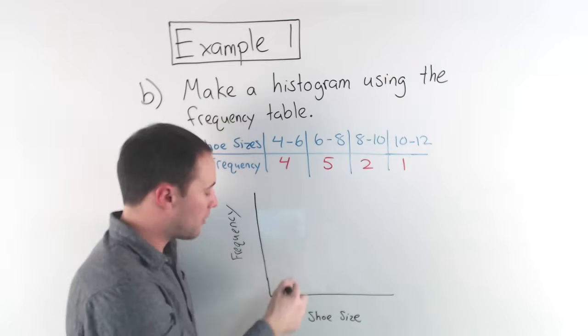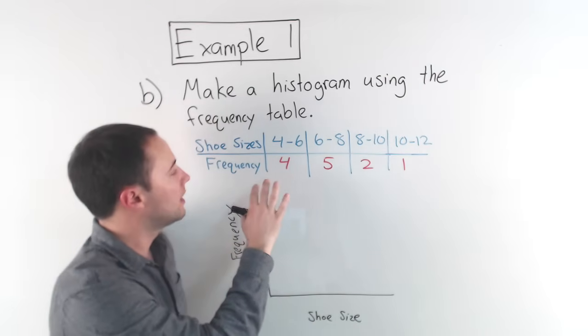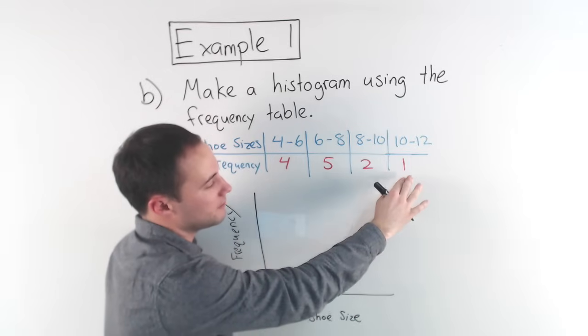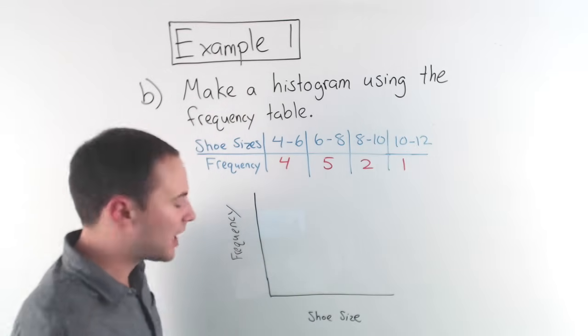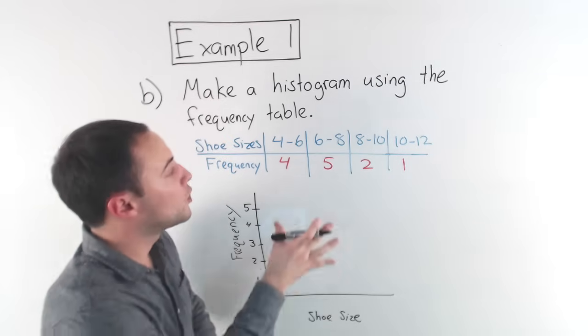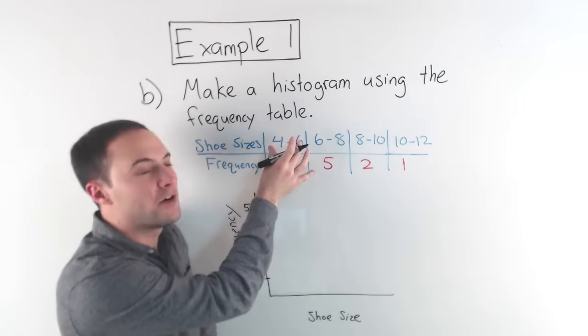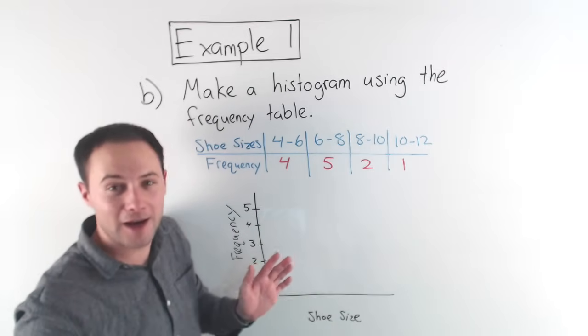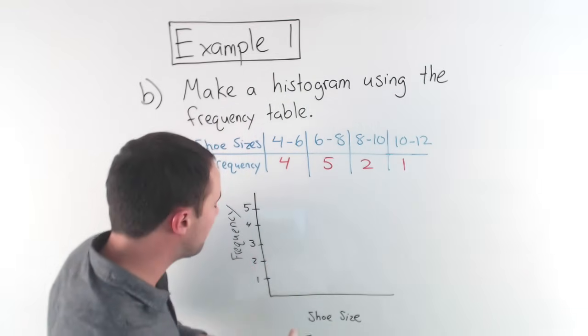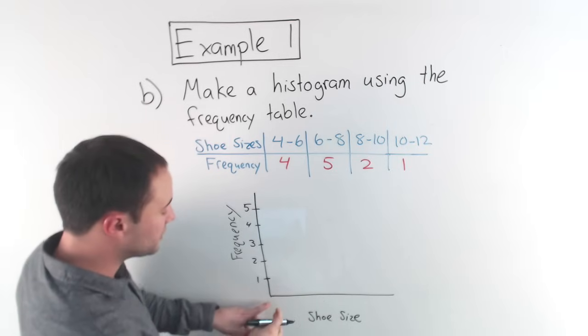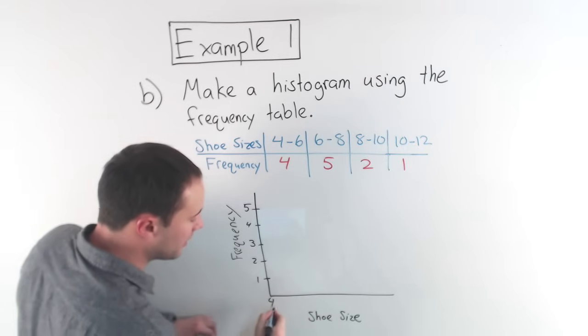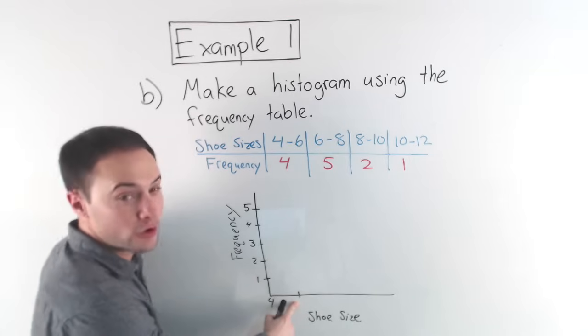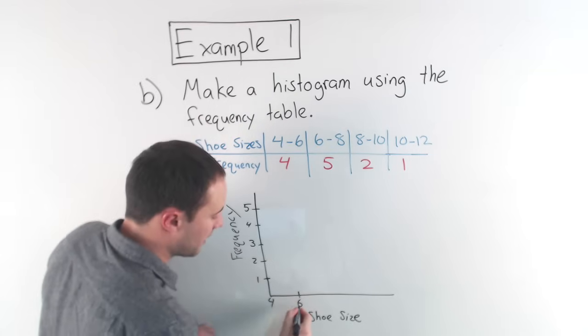You got that labeled. Now we need to figure out, well, what do I want to be counting by? Well, frequency, I go from one all the way up to five. So we can easily just count by one shoe size. We use the exact same intervals that you have here. Okay. So there's no, you don't have to think about it at all. So the first one, we're starting at four. So I'm going to put a four here and that's going to go to six. So I put a six there.